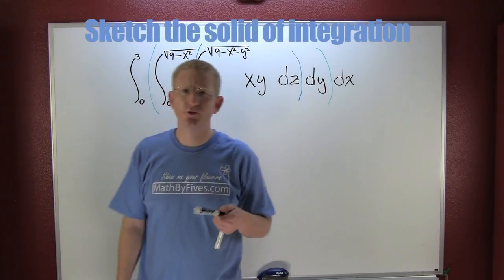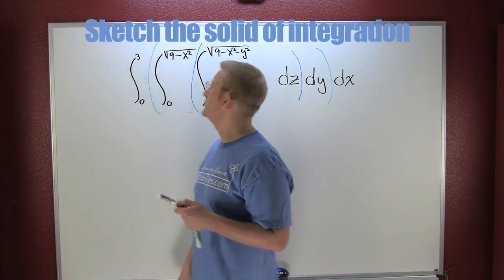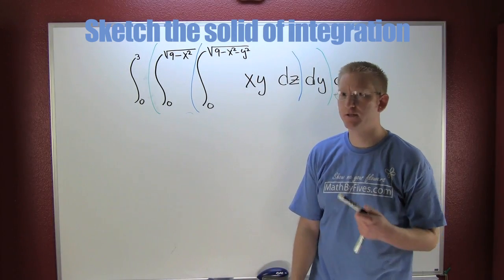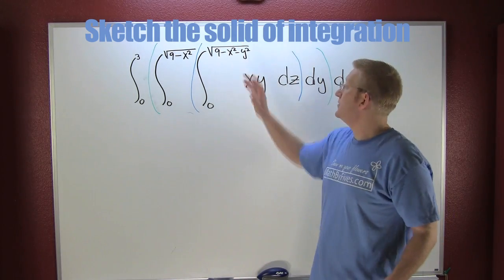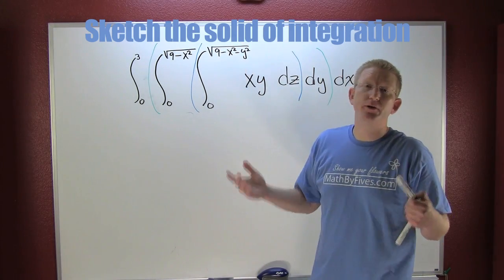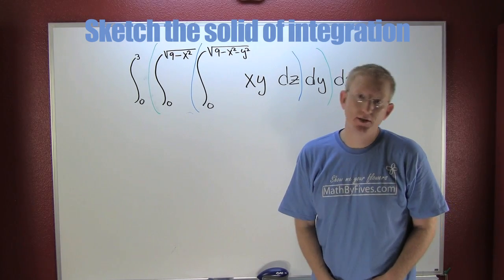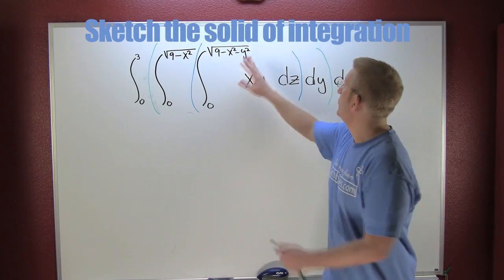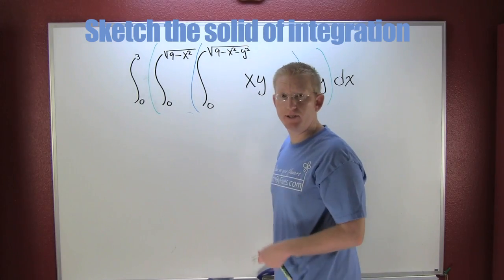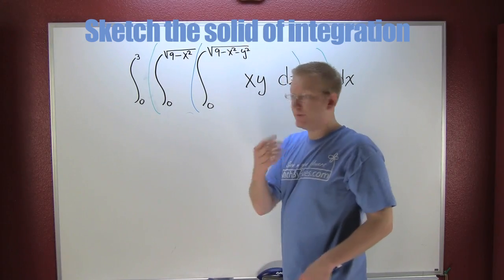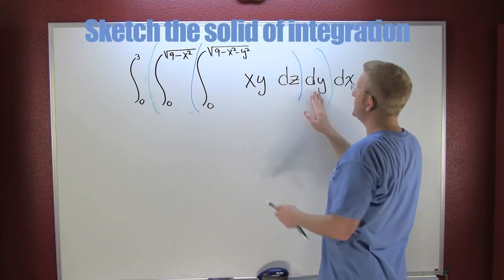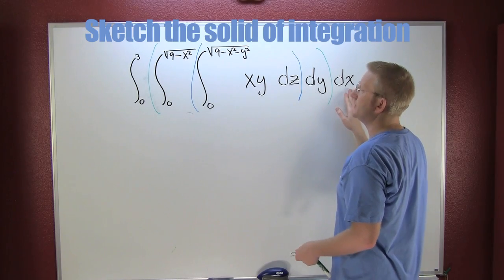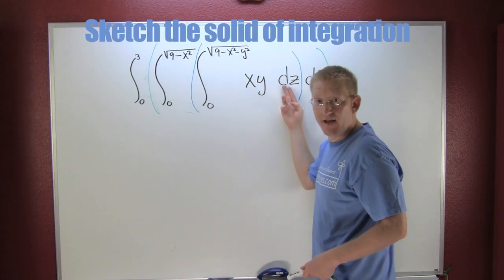In this next example with triple integrals, I want to sketch the region of integration. Rather than worrying about the integrating part, I'm looking at the region I'm integrating over. I've broken the triple integral up into three parts: the dz part, the dy part, and the dx part.